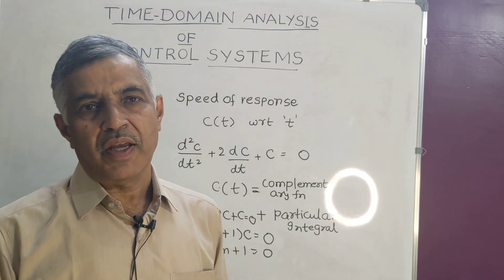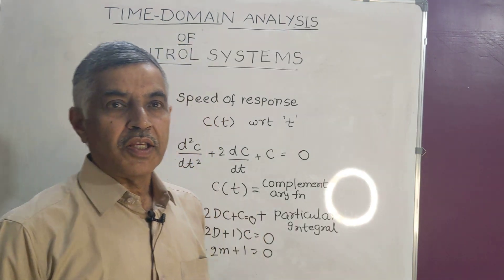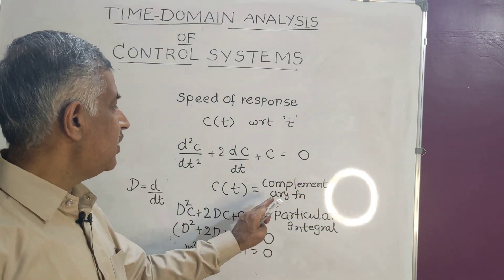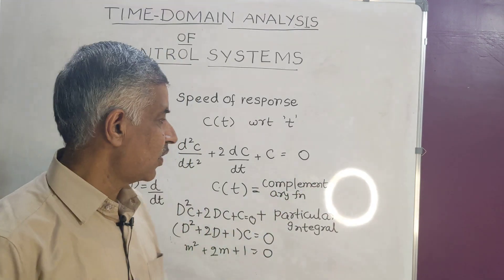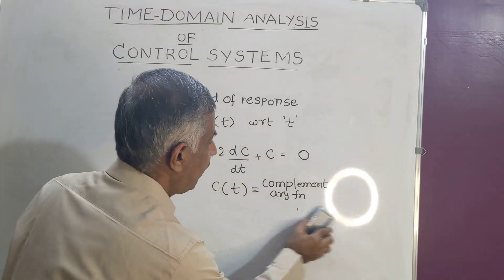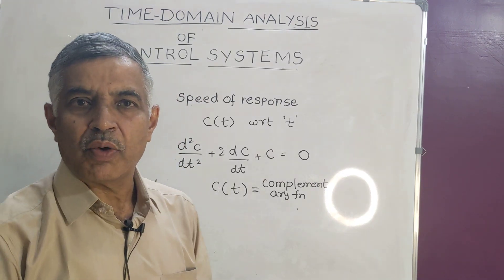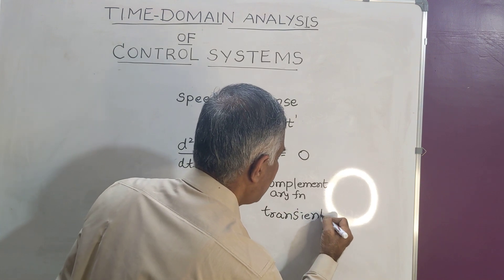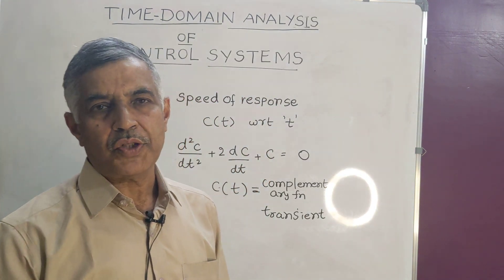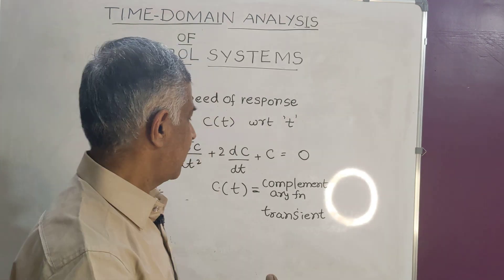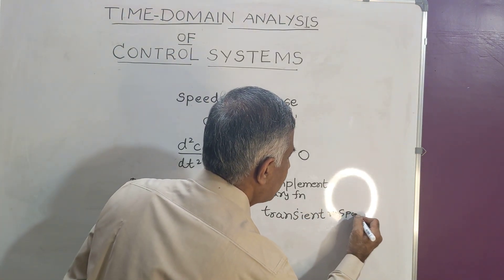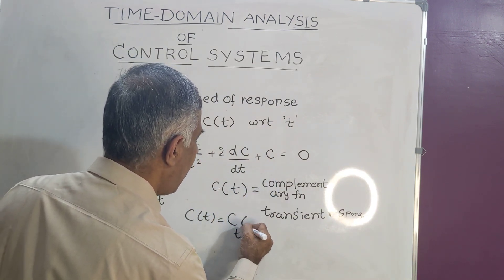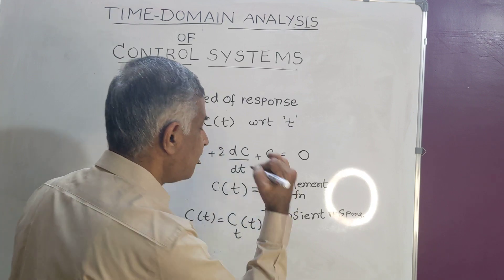In control systems there are two influences: influence of initial conditions and influence of inputs. The influence of initial conditions is reflected in the complementary function. I will now call this complementary function by another name — what is known as transient response, written as c_t(t).